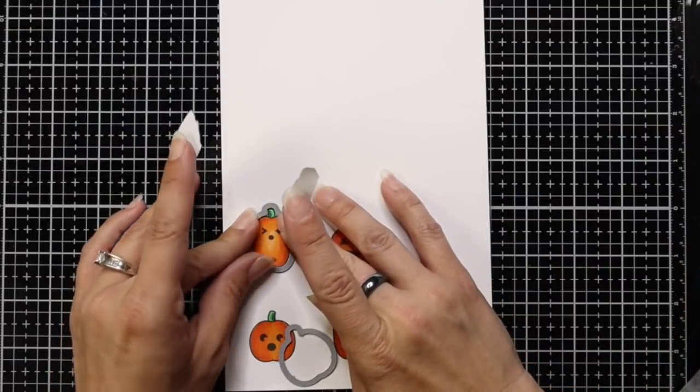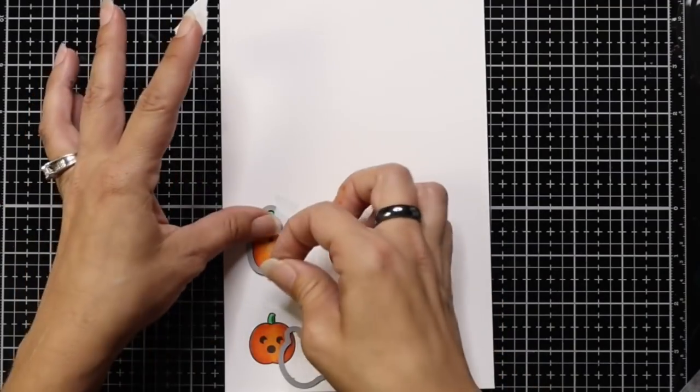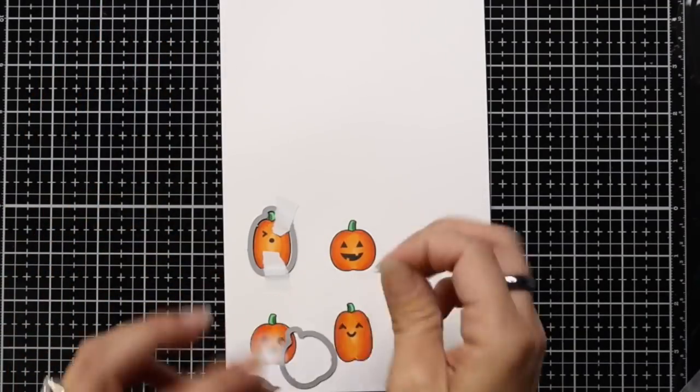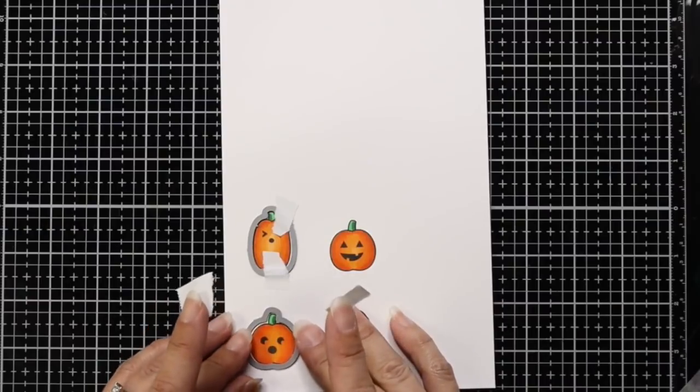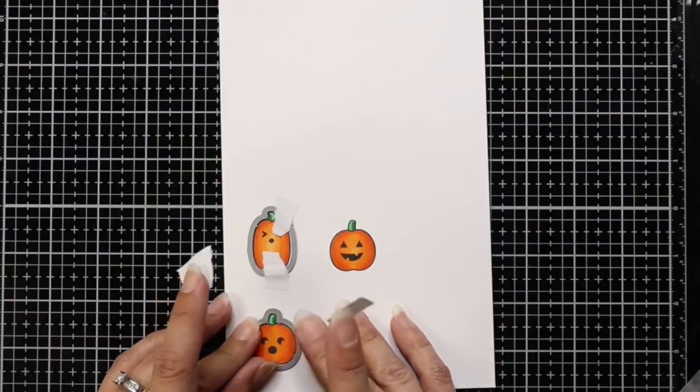And then after that's done, I'm going to take the coordinating dies off of both of these stamp sets, hold them in place with some post-it tape, and then run this through my die cut machine. And I'll set all of my pieces off on the side so that I can work on my background.